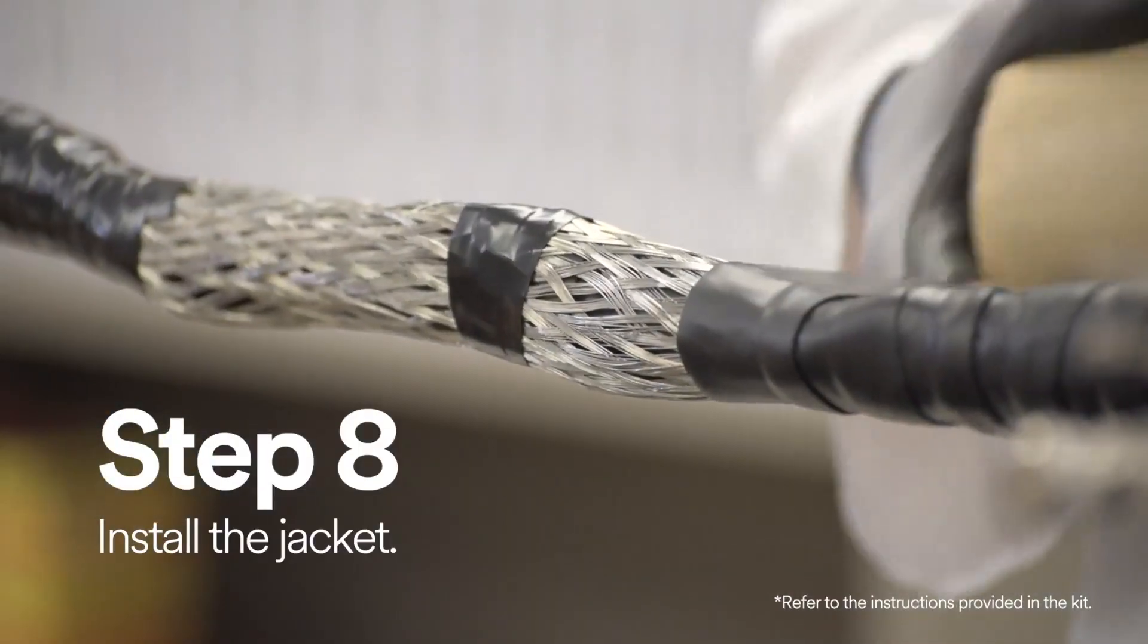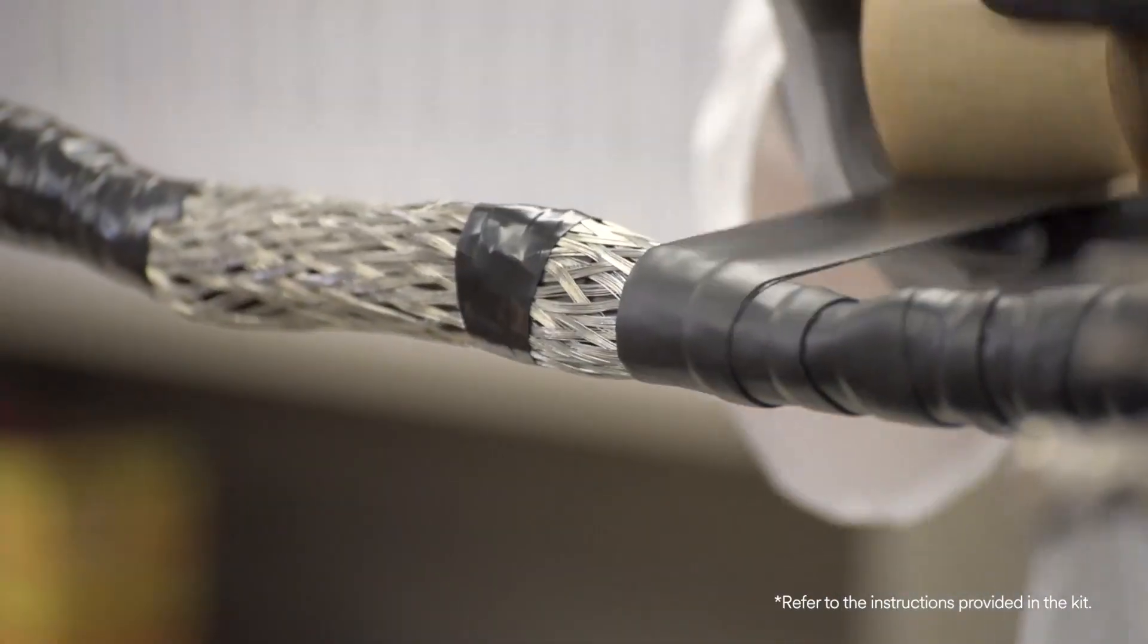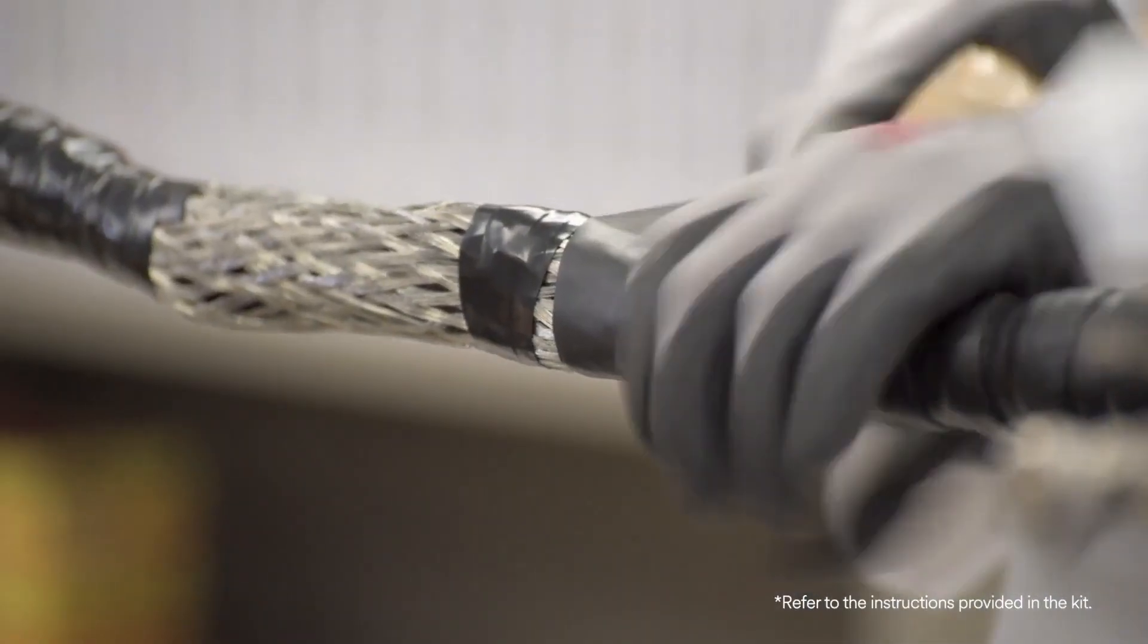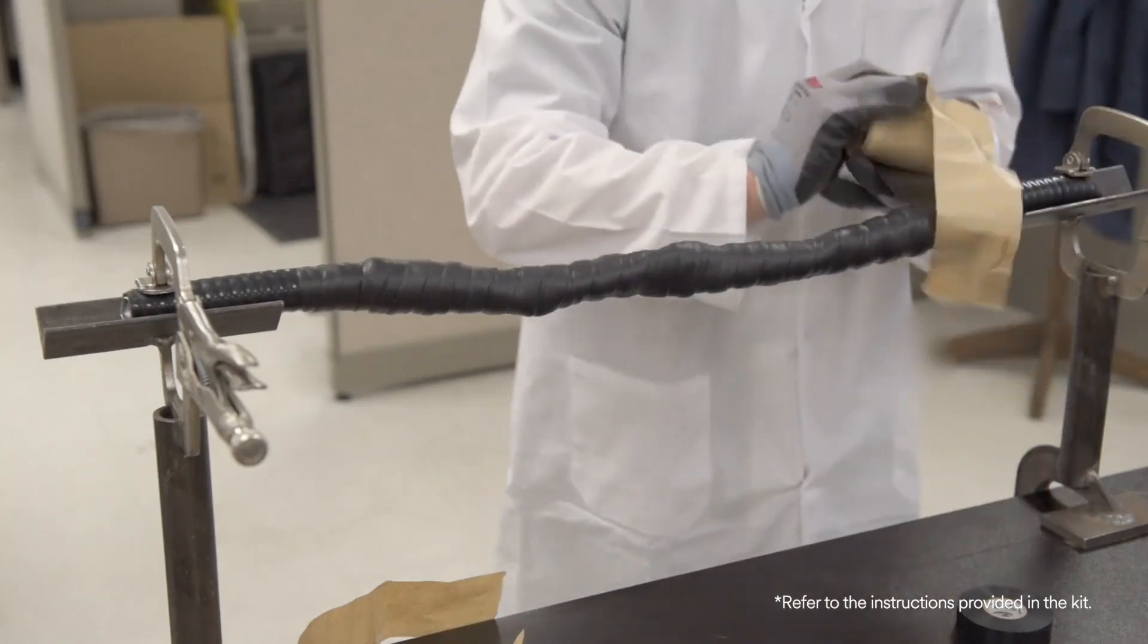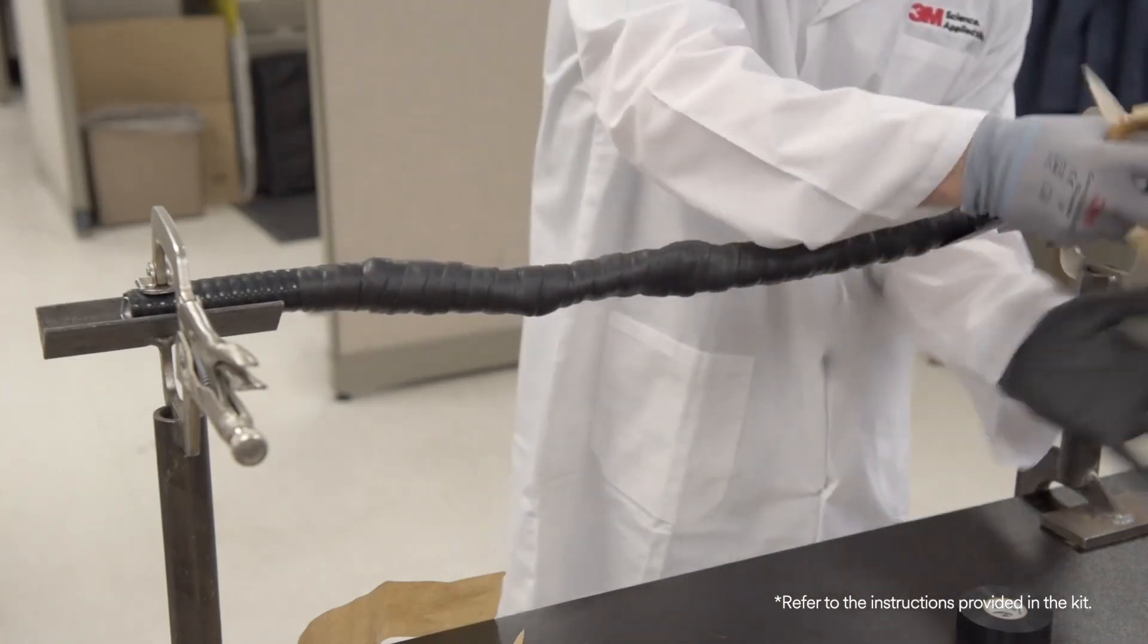At both ends of the splice, apply two half-lapped layers of scotch rubber mastic tape 2228 around the cable jacket, making sure the tape extends 2 inches over the jacket.